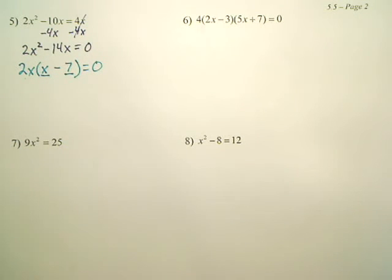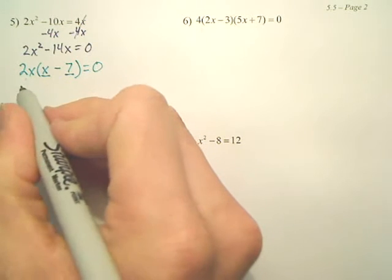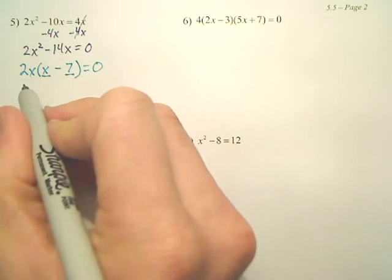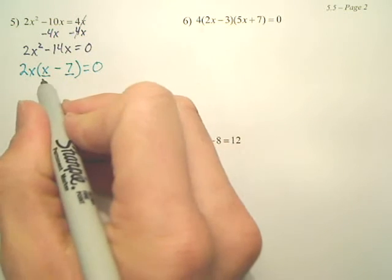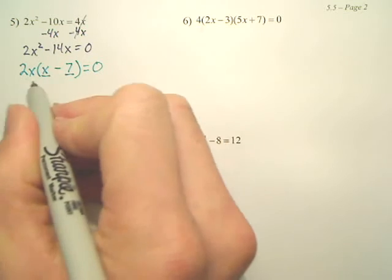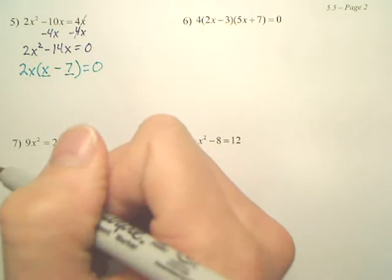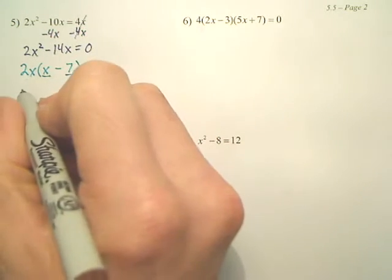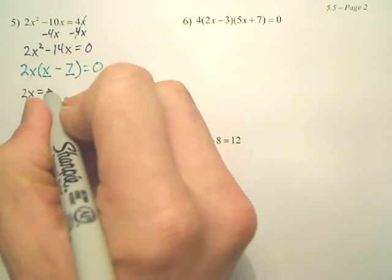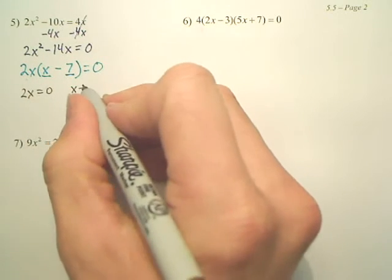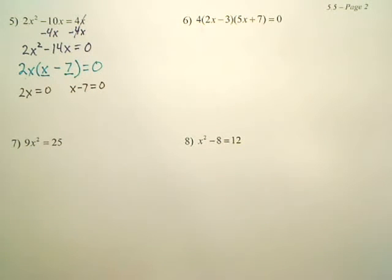Okay, now how does that help me? Well, doesn't 2x have to equal zero or x minus 7 has to equal zero? Don't one of those pieces have to equal zero? So either 2x has to equal zero or x minus 7 has to equal zero. One of those two has to equal zero to make it equal to zero.